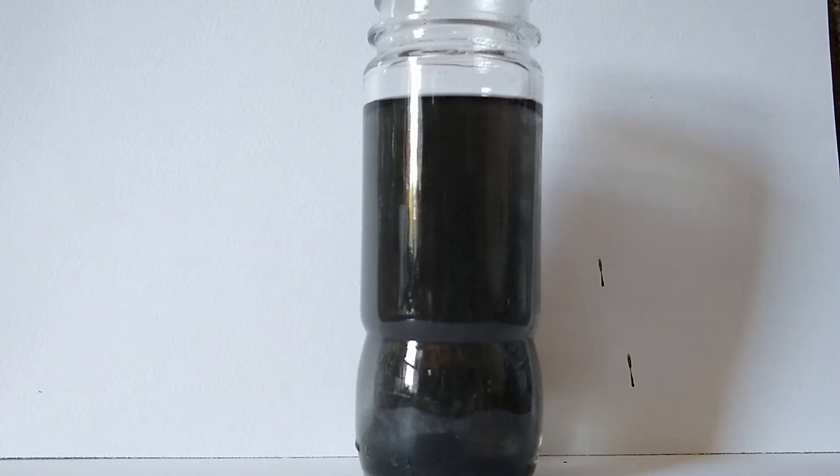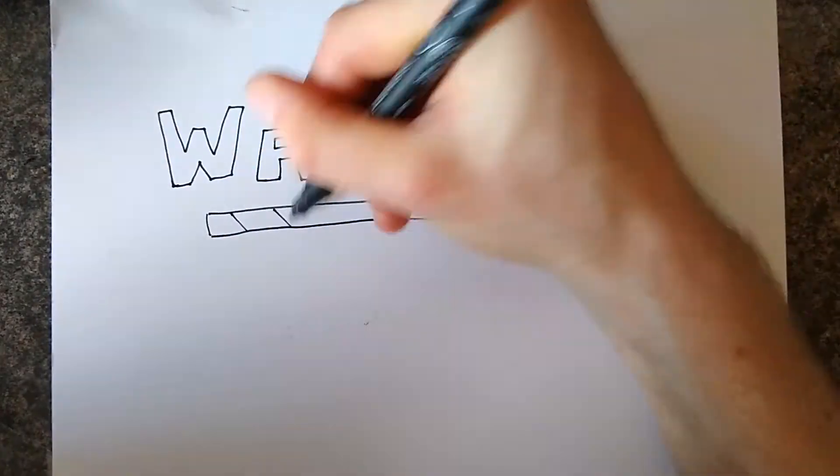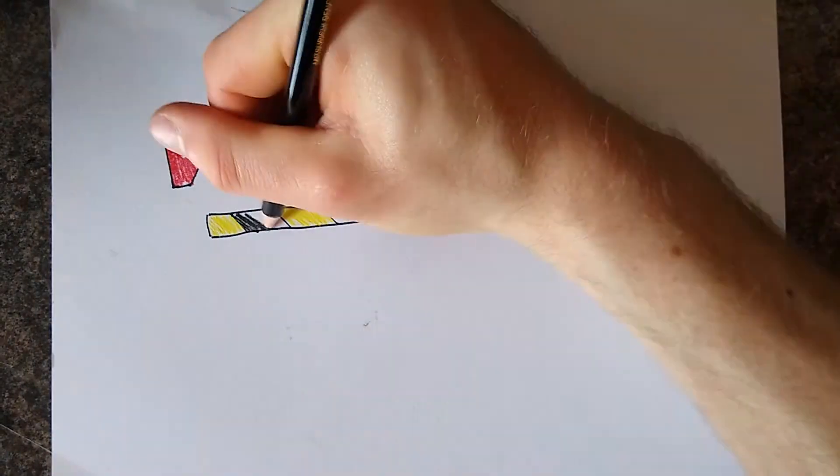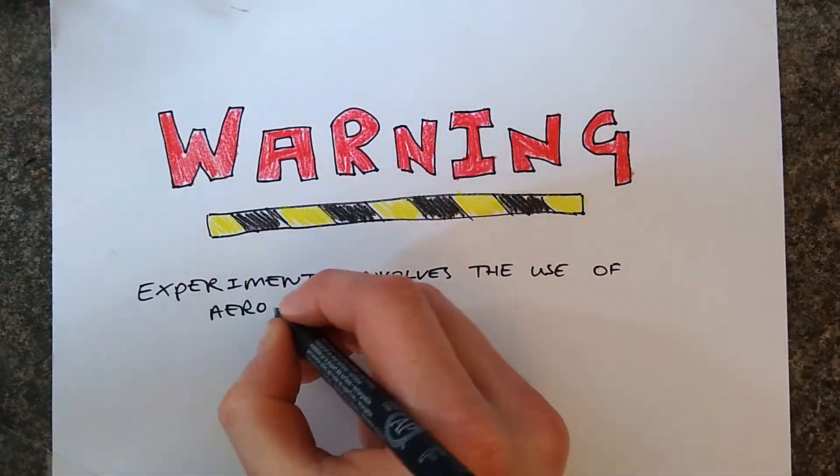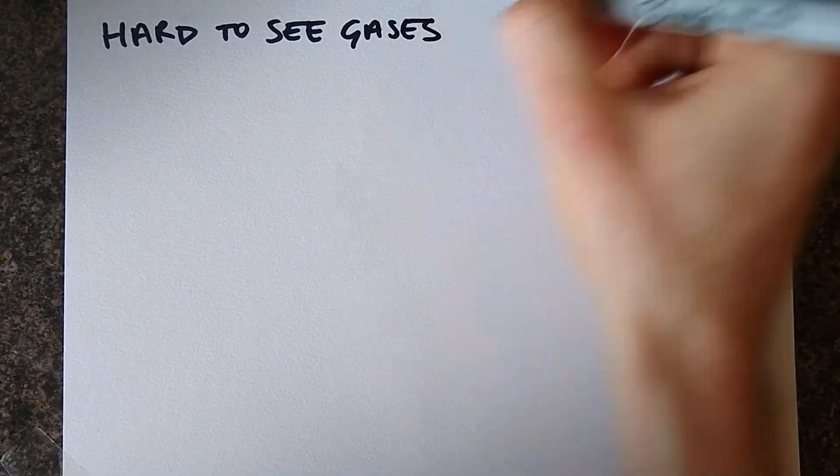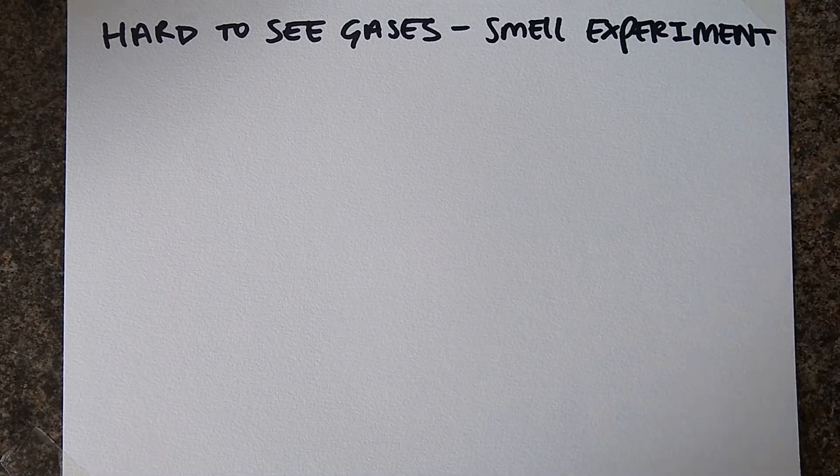Slight warning: this experiment involves the use of aerosols which may not be suitable for people who suffer from asthma or have other breathing difficulties. It's not as easy to see gases diffusing but it is possible to smell them. This experiment involves placing one person with a can of deodorant or air freshener at one end of the room.